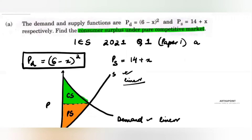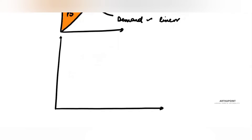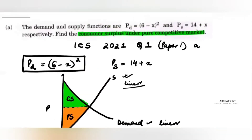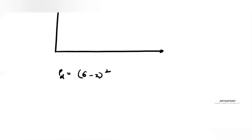In order to plot this, I know X can only take positive values because X is the consumption. The demand function is P = (6 − X)². I can start by taking X equal to 0, 1, 2, 3, 4, 5, 6, 7, 8, 9, and 10 — these are more than enough.